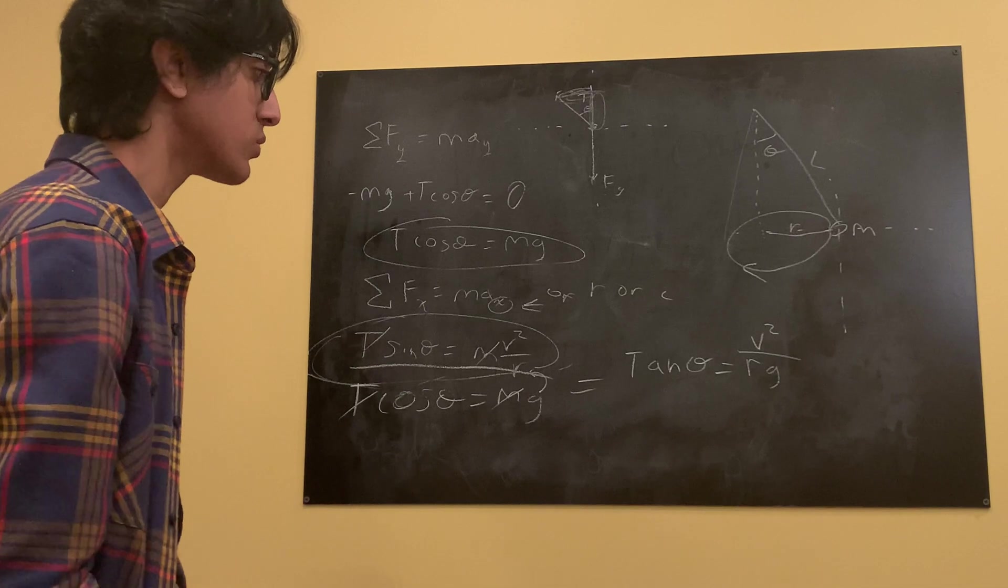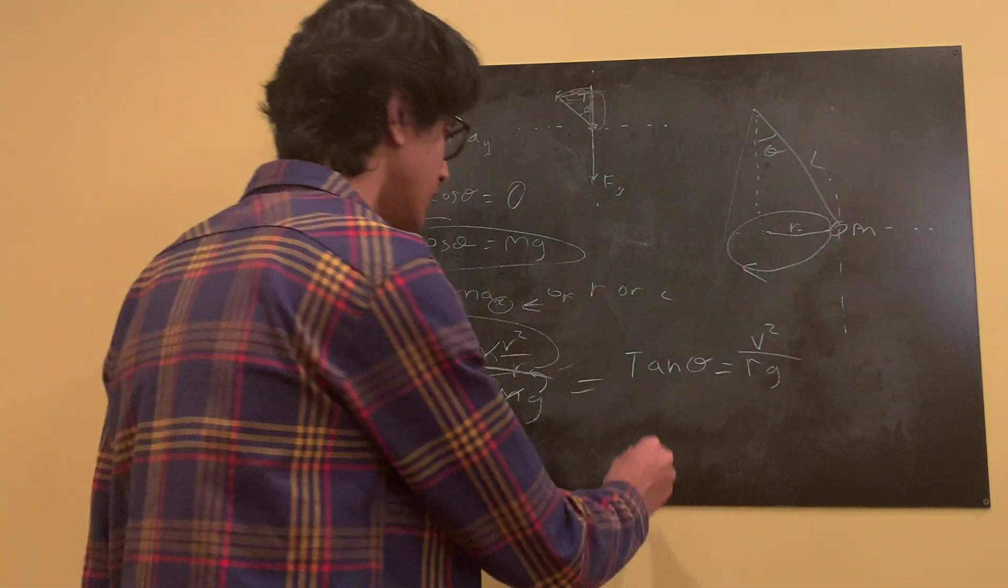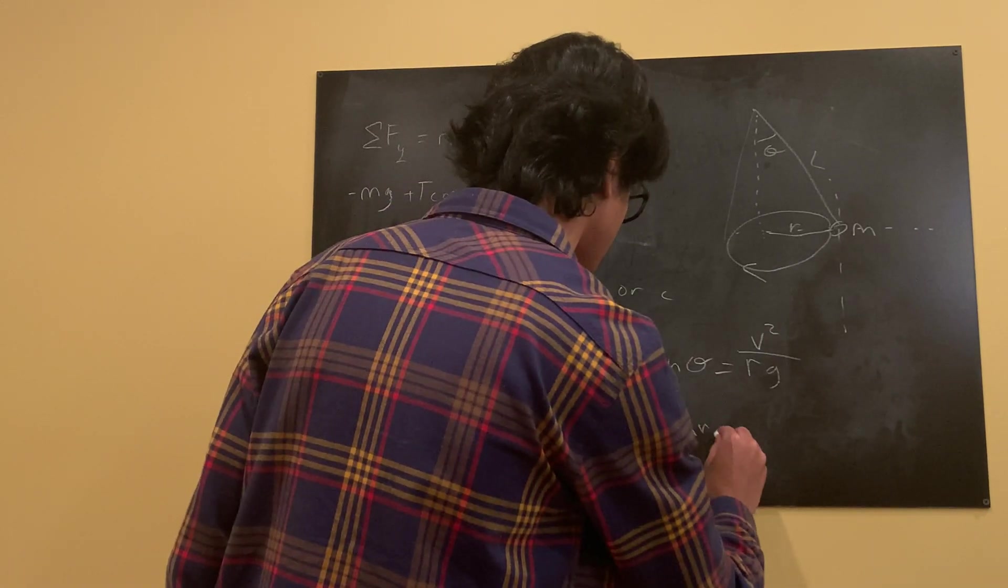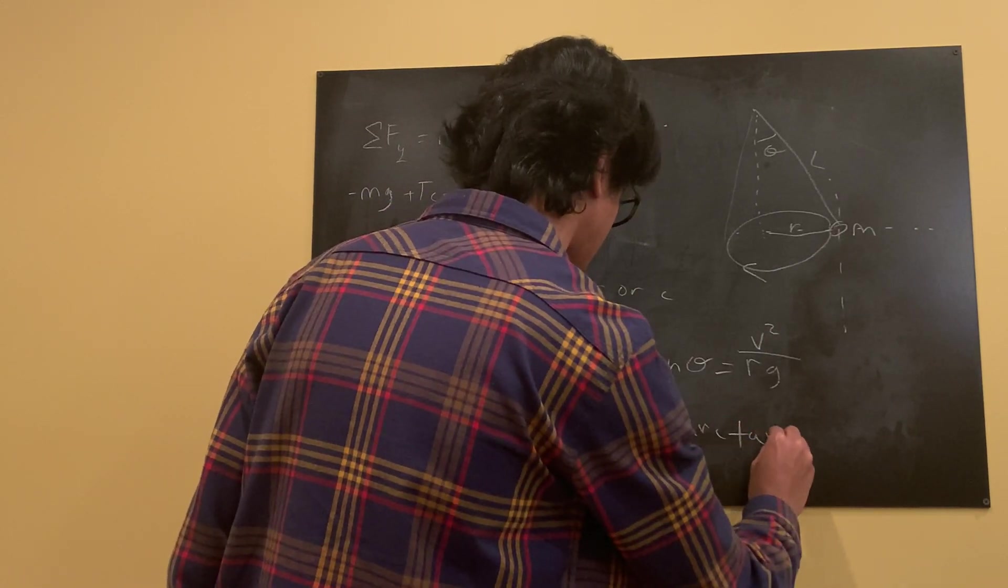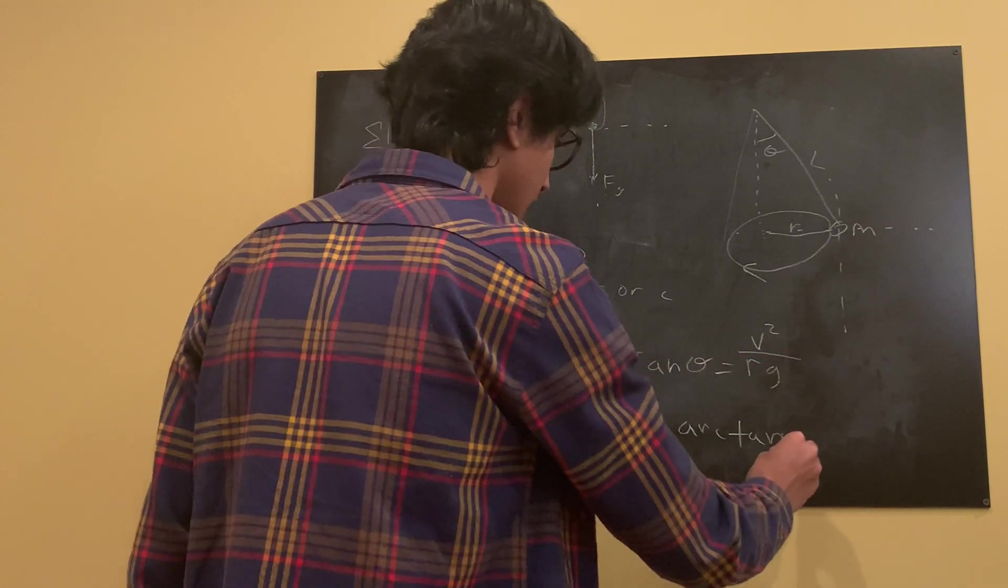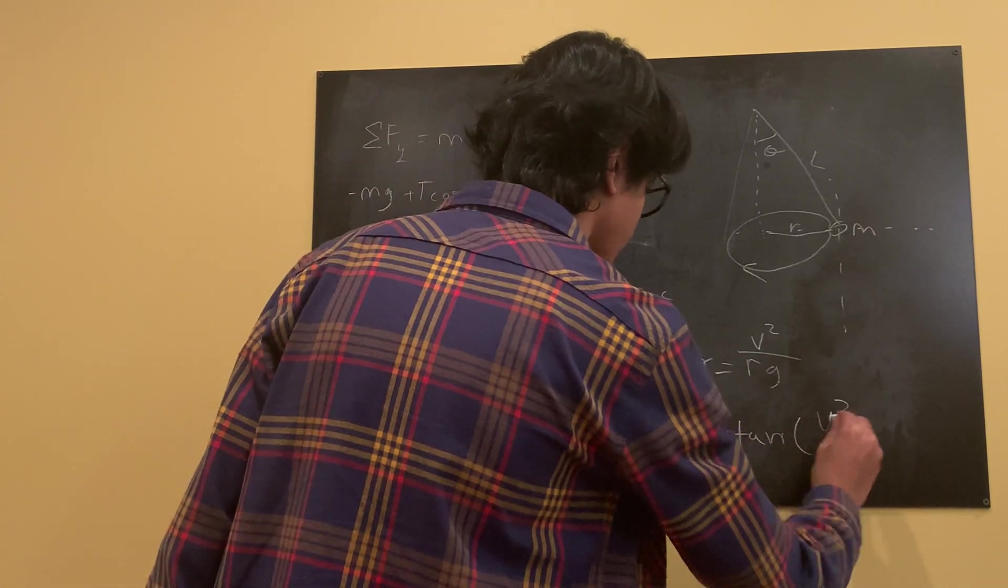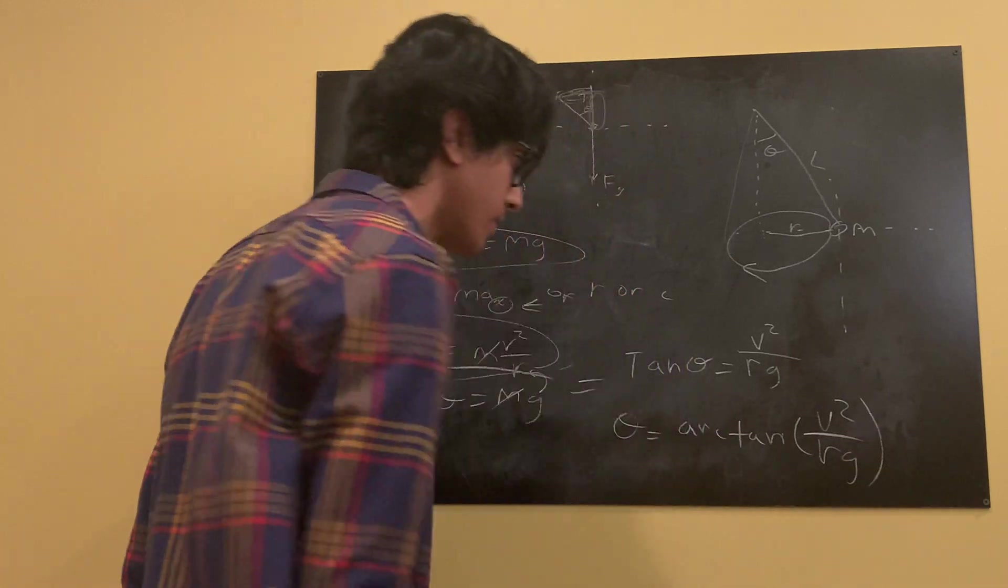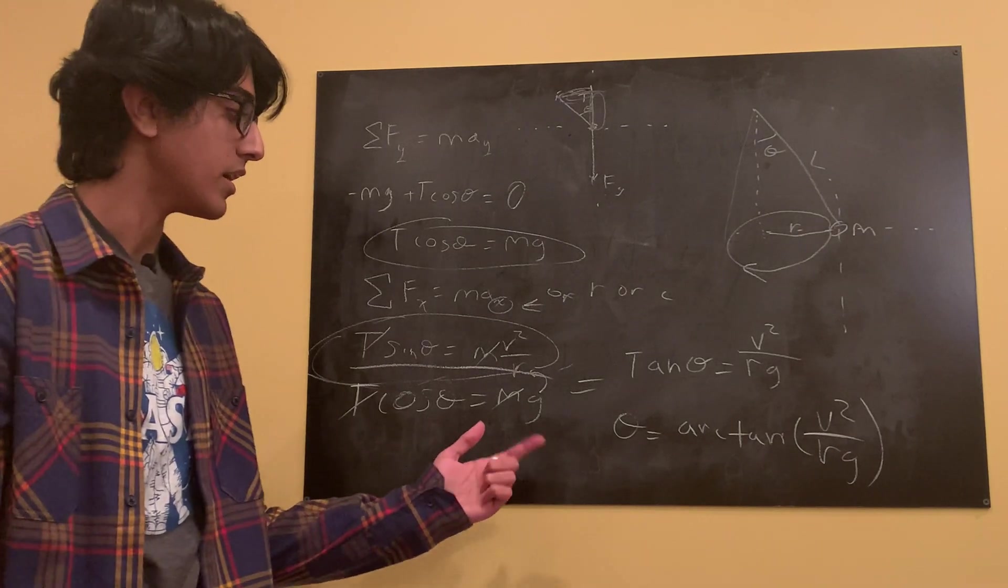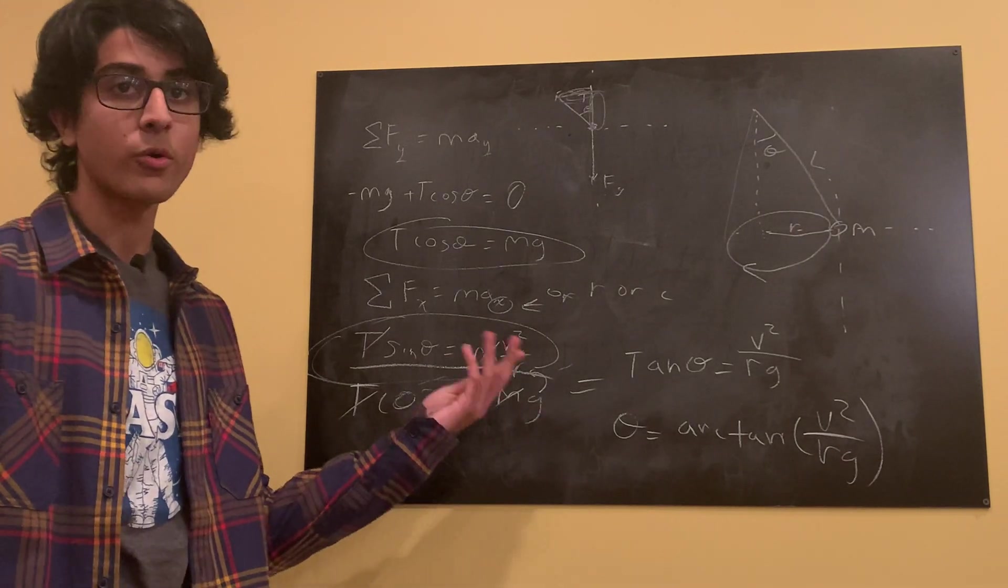And now, we just want to find what this angle is equal to. Tan. Inverse tan. This. Since tan is equal to that. V squared over rg. And, there it is. That's how you find the angle of a conical pendulum.